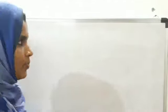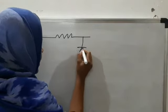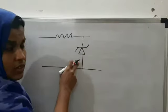In Zener voltage regulator, a Zener diode is operated in breakdown region. Here, we are using Zener diode in reverse mode. This is the symbol of Zener diode.